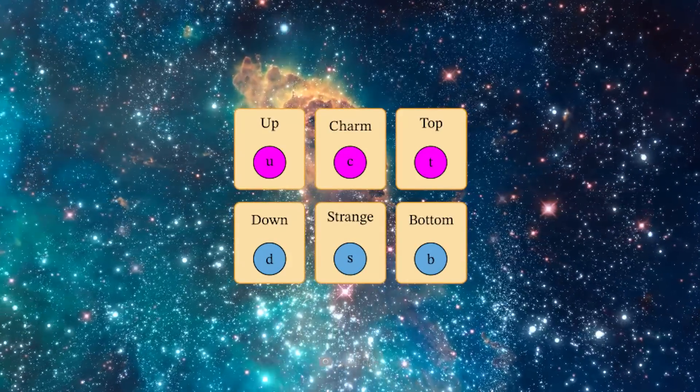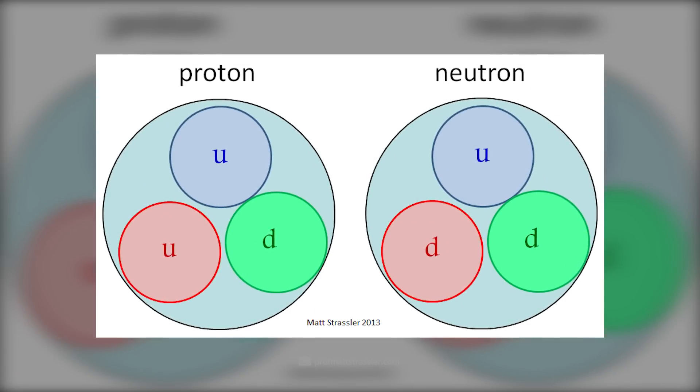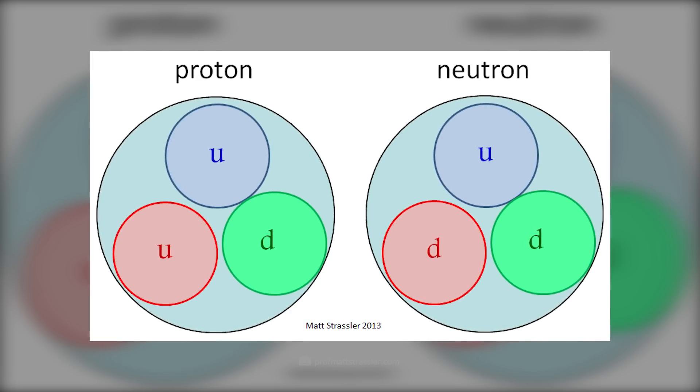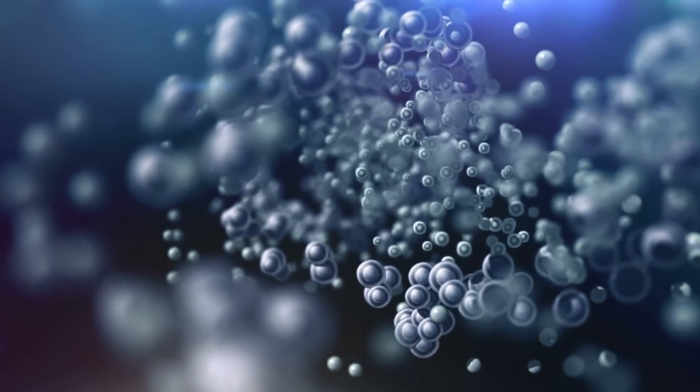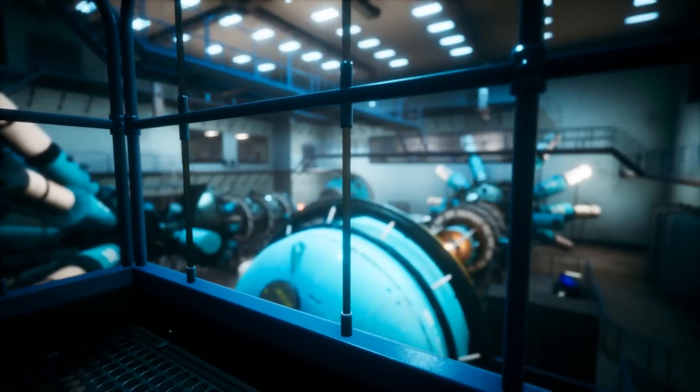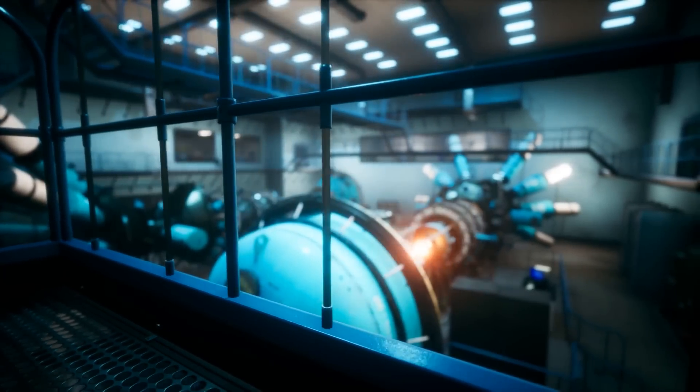Up, down, charm, strange, top, and bottom. Protons and neutrons, for example, consist of up and down quarks, or in other words, those quarks that have the lowest mass. Their heavier counterparts, in turn, are found only in extremely short-lived hadrons, such as those formed in modern particle accelerators.